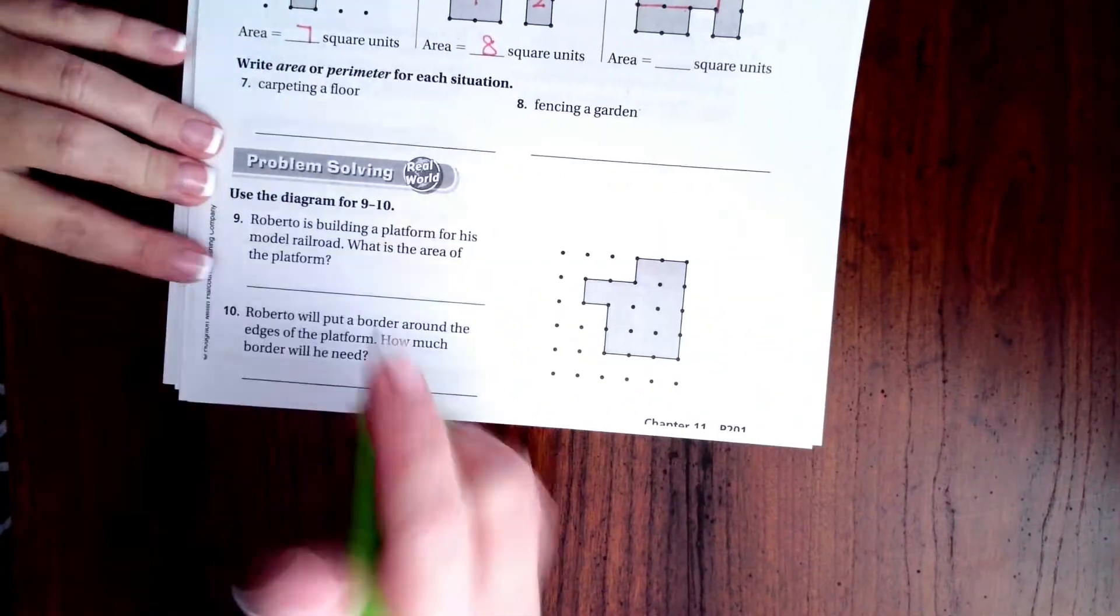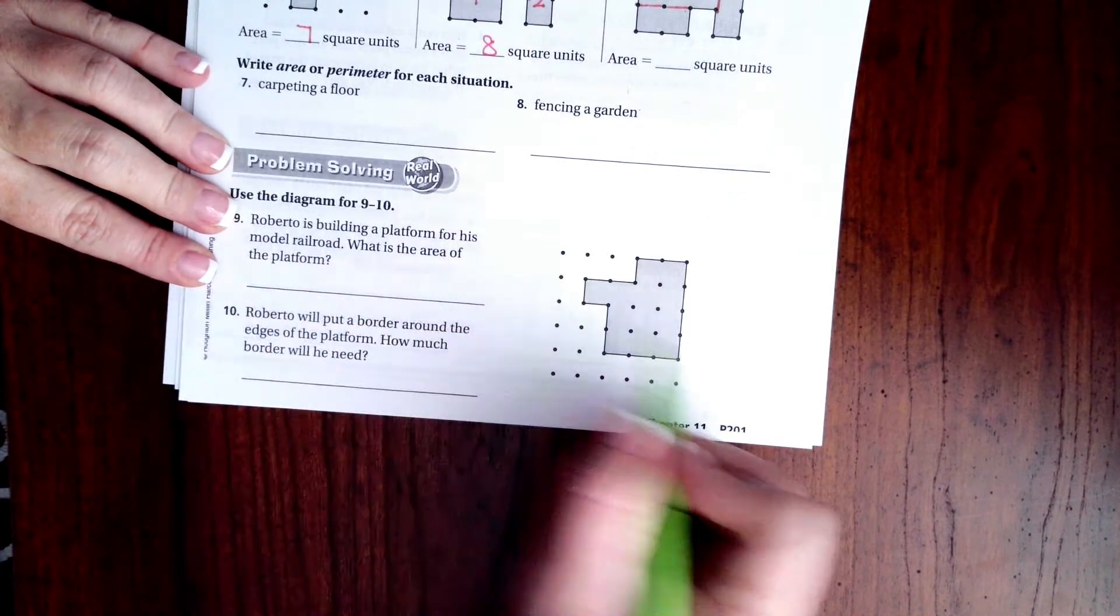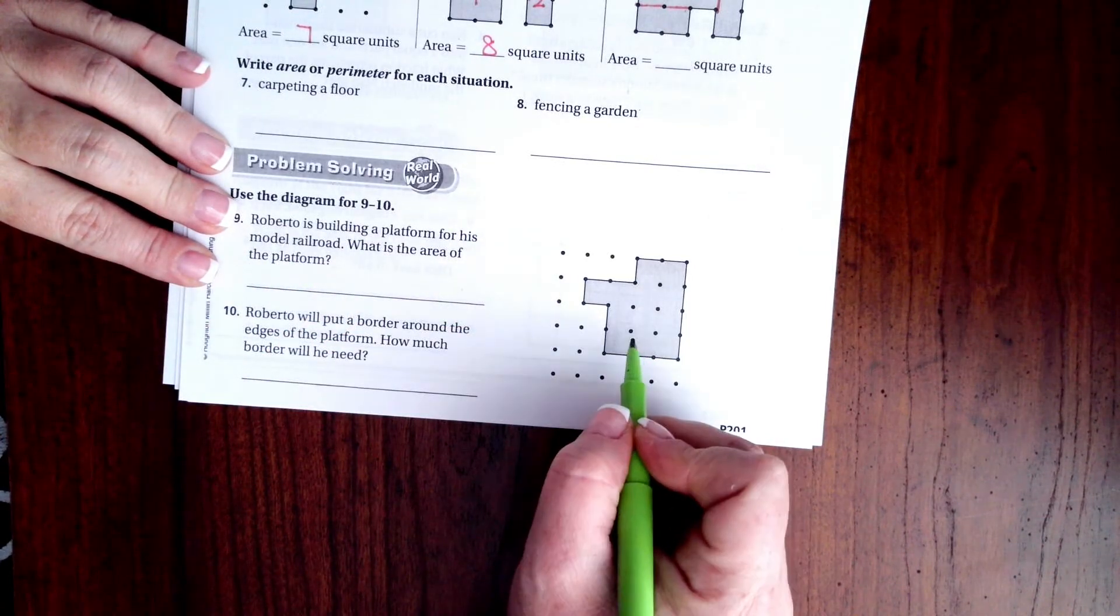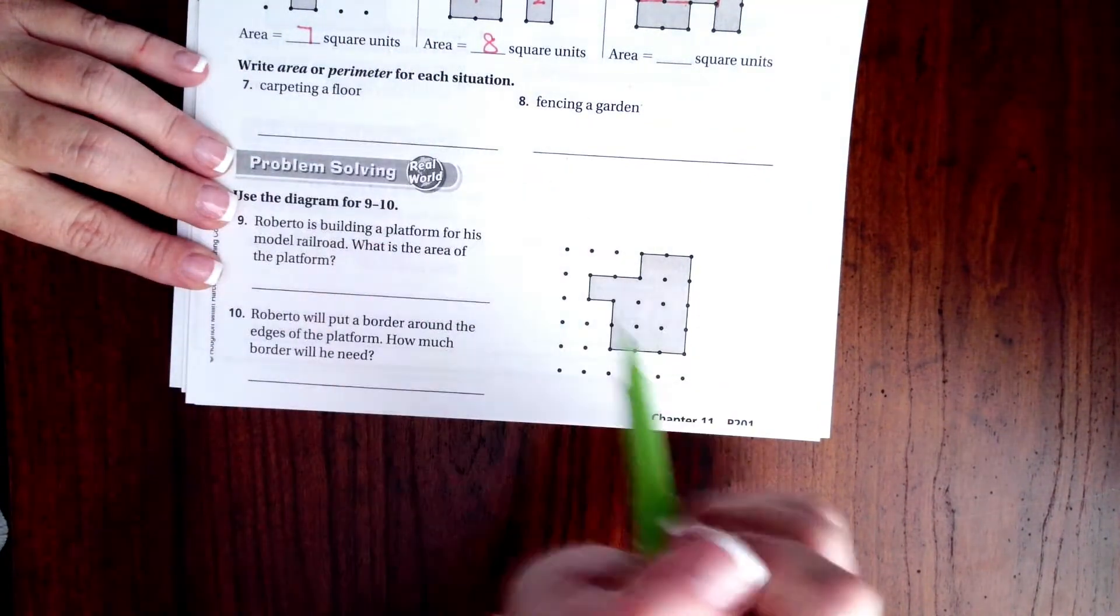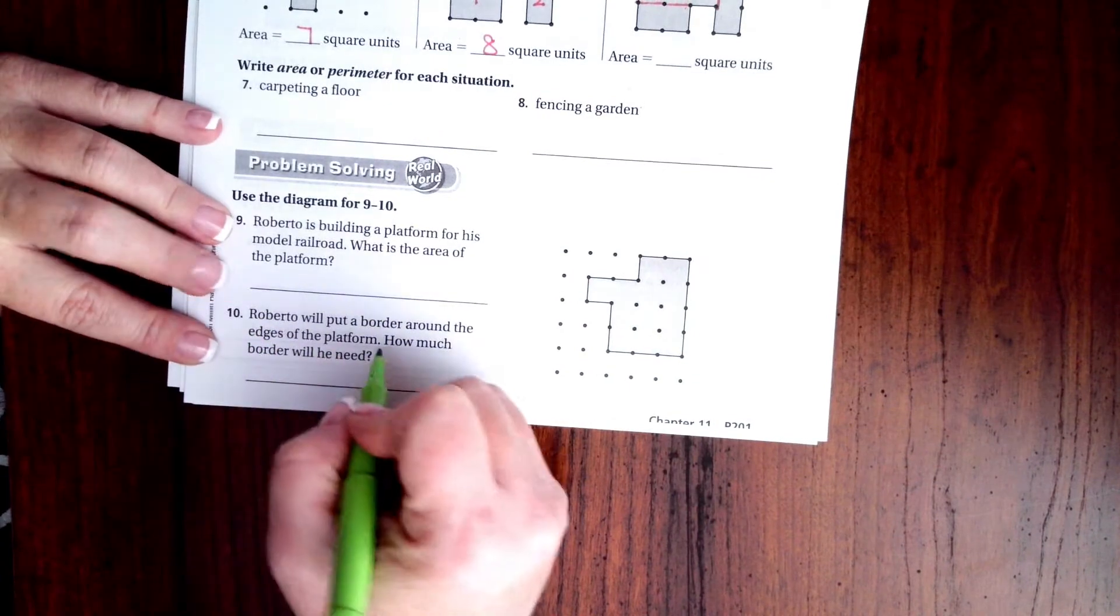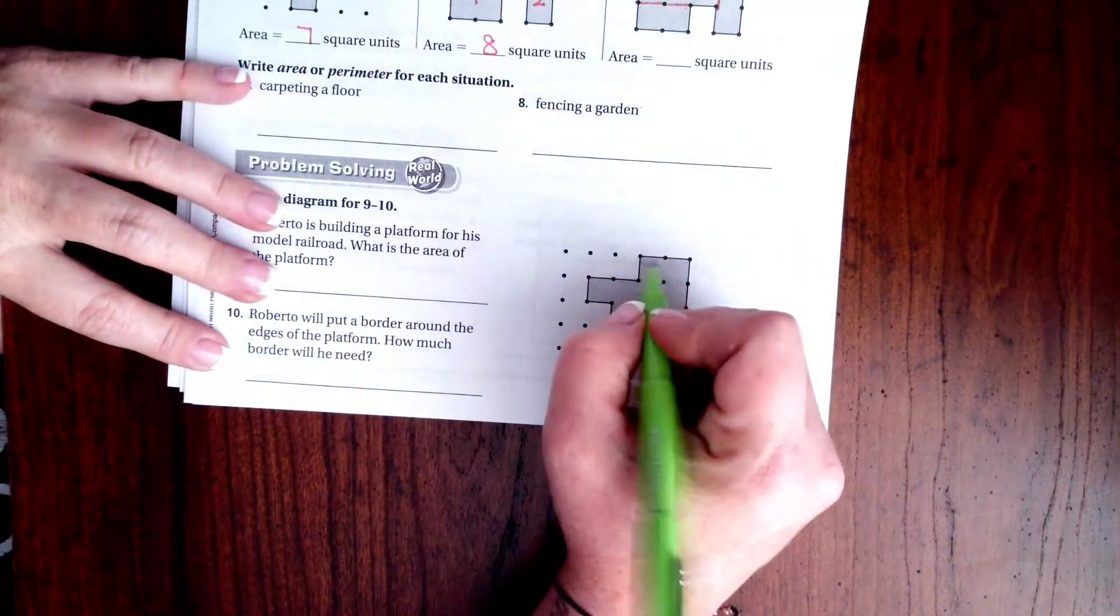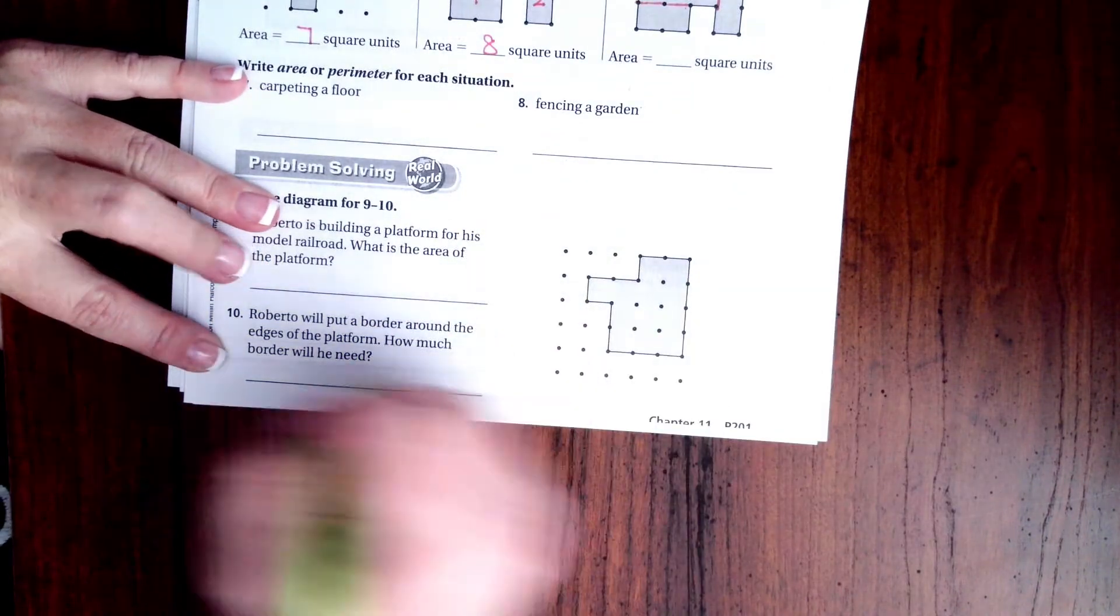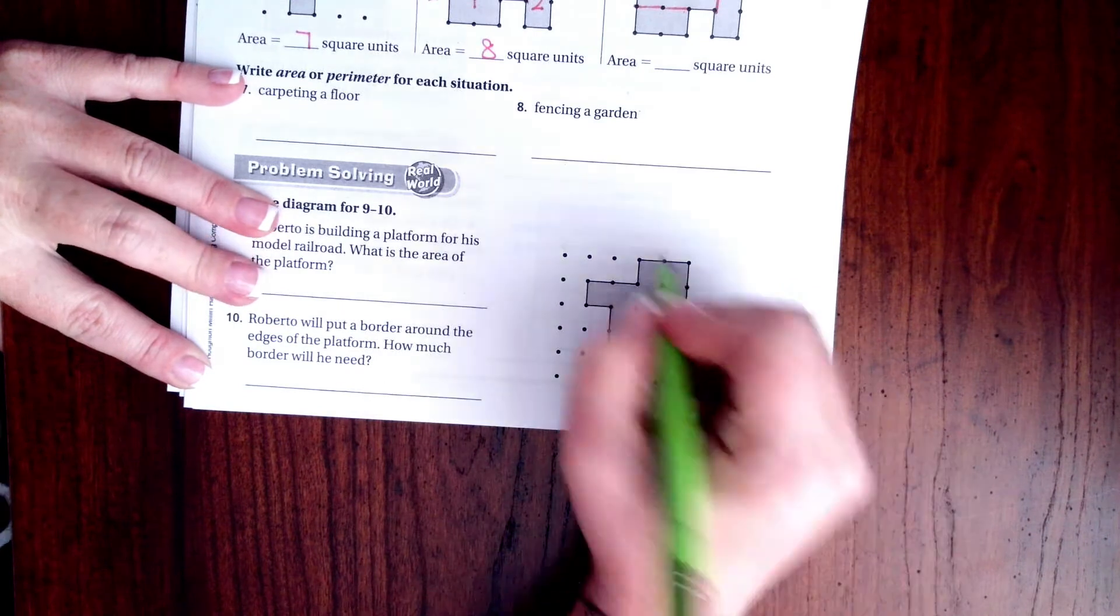Go down to number 9. Roberto is building a platform for his model railroad. What is the area? So I want you guys to do that. You guys can totally do that. You're just finding the area, which is all we are doing up here. Find it down here. Roberto will put a border around the edges of the platform. How much will he need? So then you're going to find the perimeter. So this one is the perimeter, which is counting around how many.